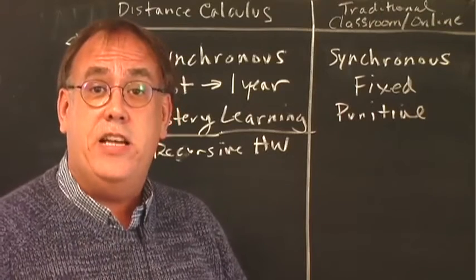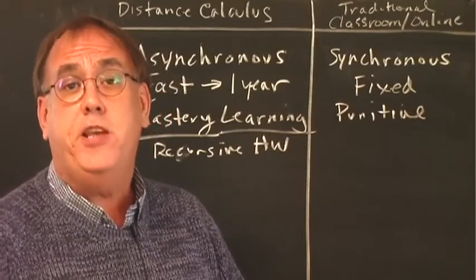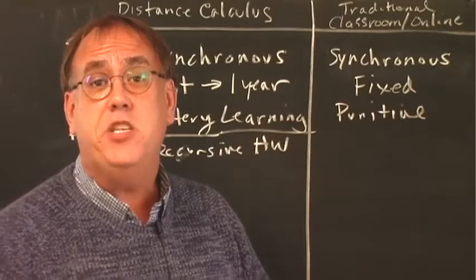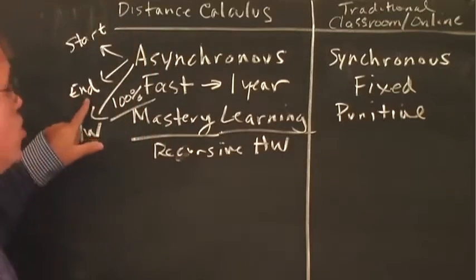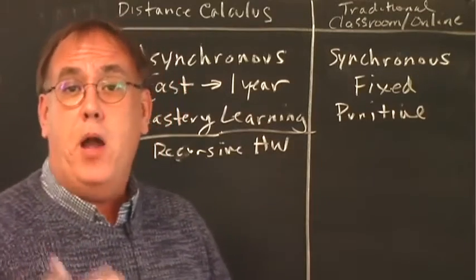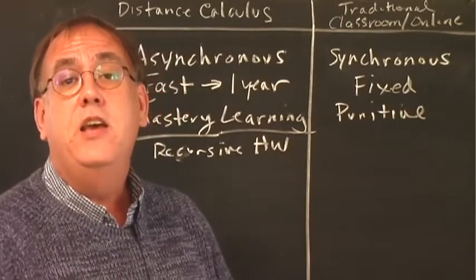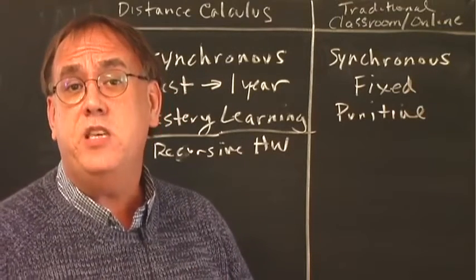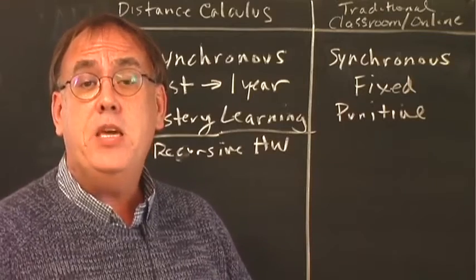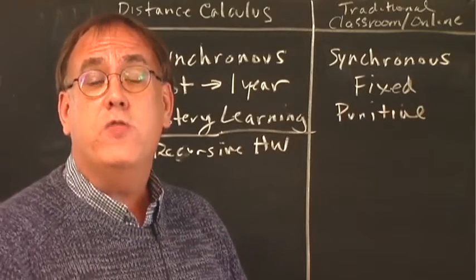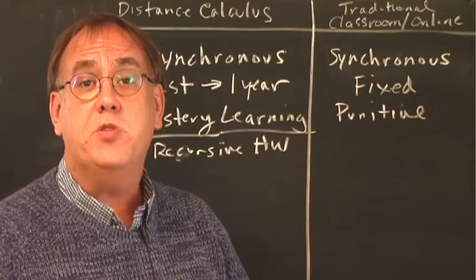So our homework is also asynchronous and there are no deadlines for our homework. You don't have to have your homework done by a certain date. Now many students do like deadlines for their homework and we have an option in our class accounts where we can turn on suggested due dates based upon your goal finishing date for your course. And that helps you keep on pace what you should get done by a certain date to try to help you and some students like that. But there's no penalties if you're late because you're going to keep working on that assignment over and over again until it is 100% correct.